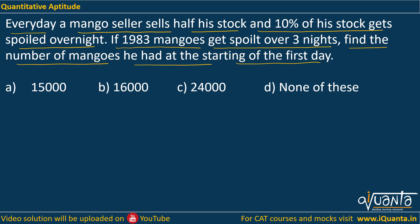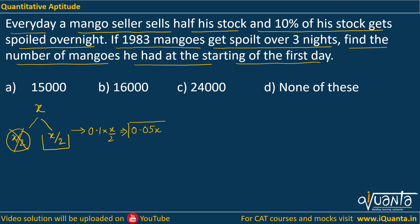Let us assume that he started with X on day one. He will sell 50% of it, so X by 2 will be sold — this is gone. We will be left with only X by 2. Now 10% of this will be spoiled, that means 0.1 into X by 2, which we can write as 0.05X. This much stock is spoiled on the first night.